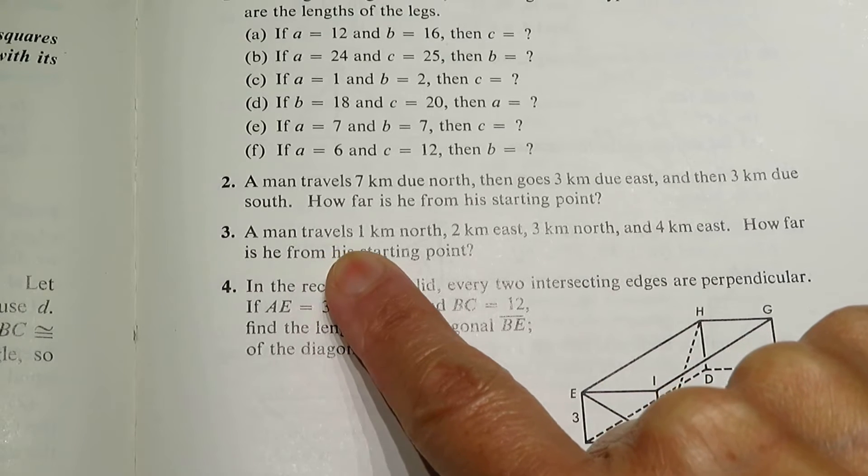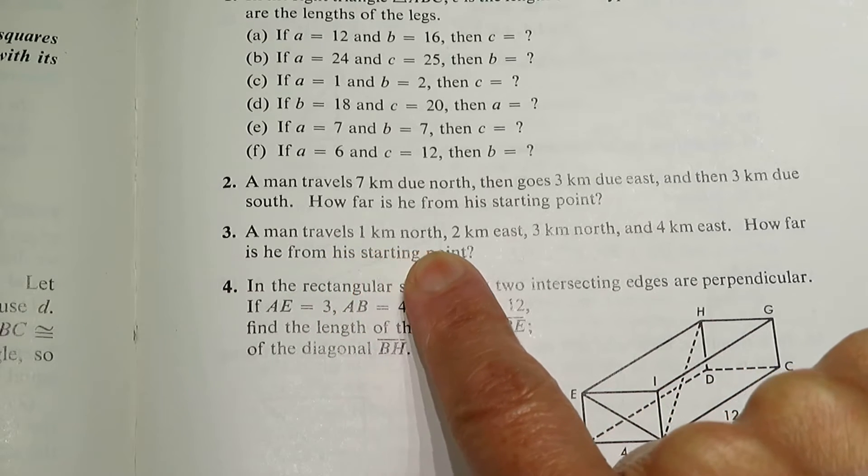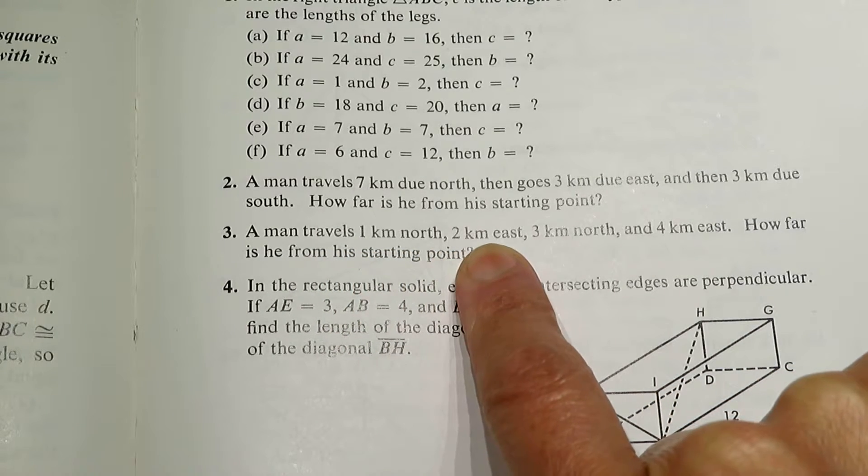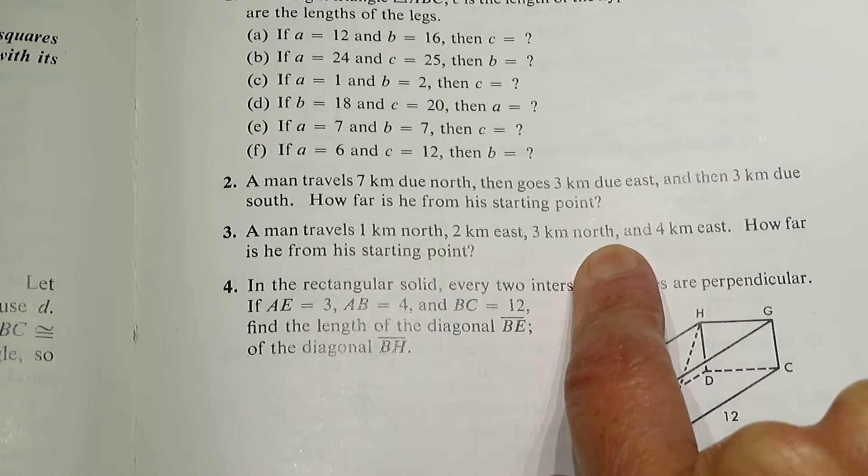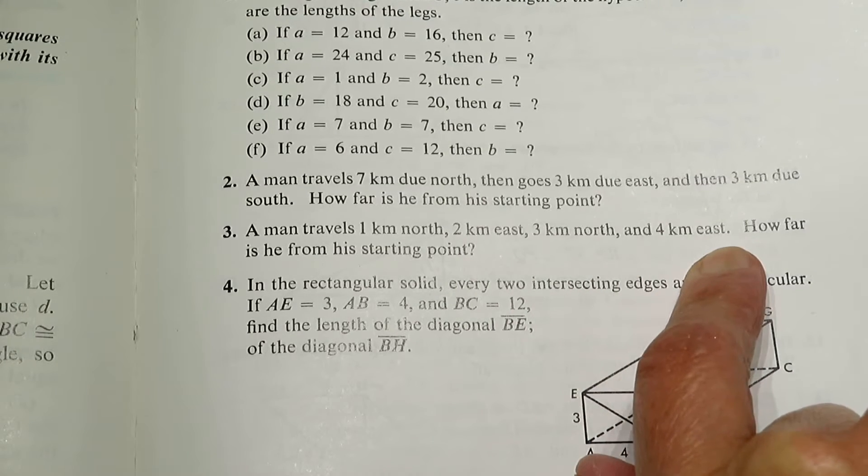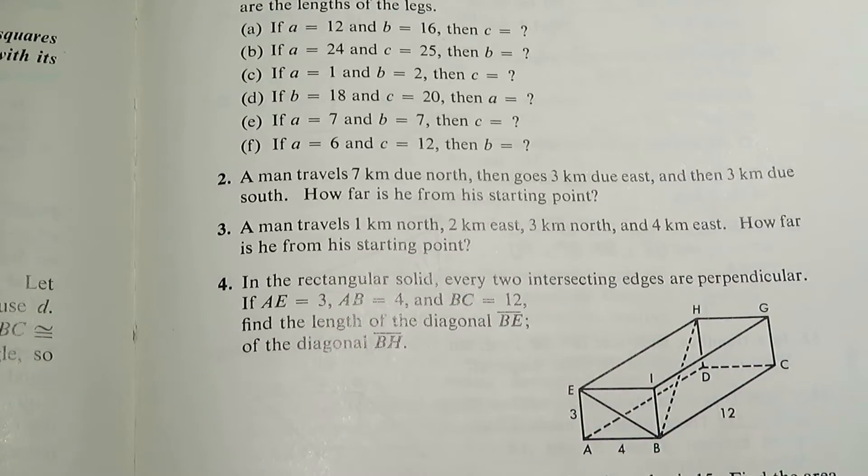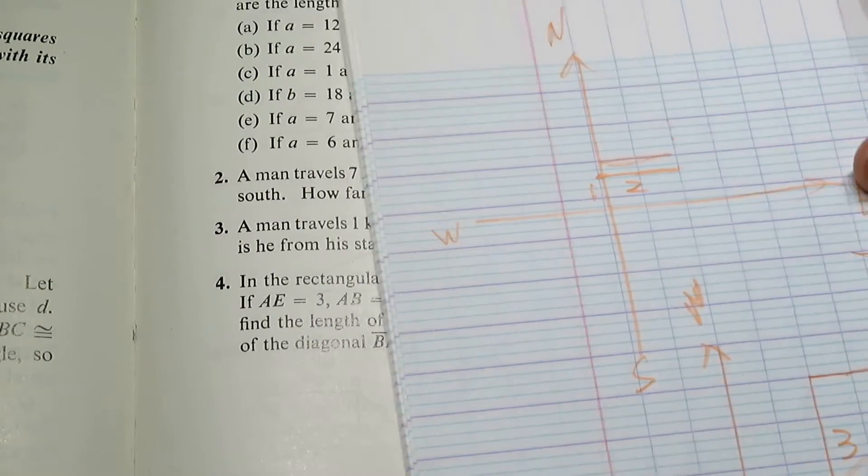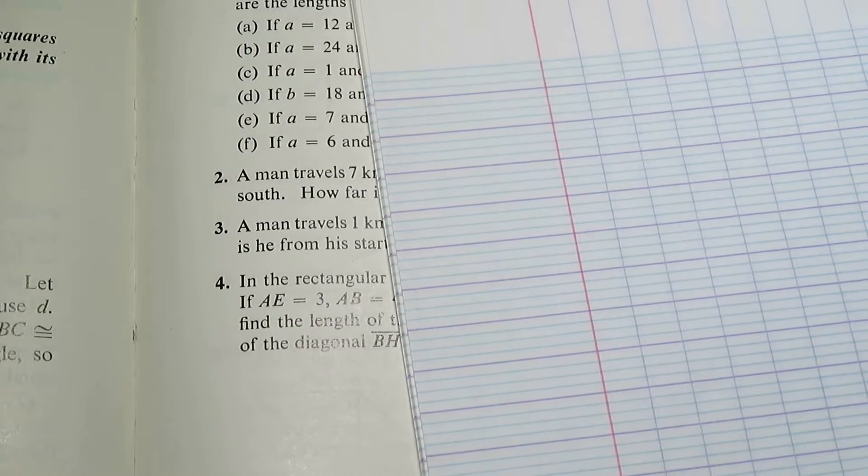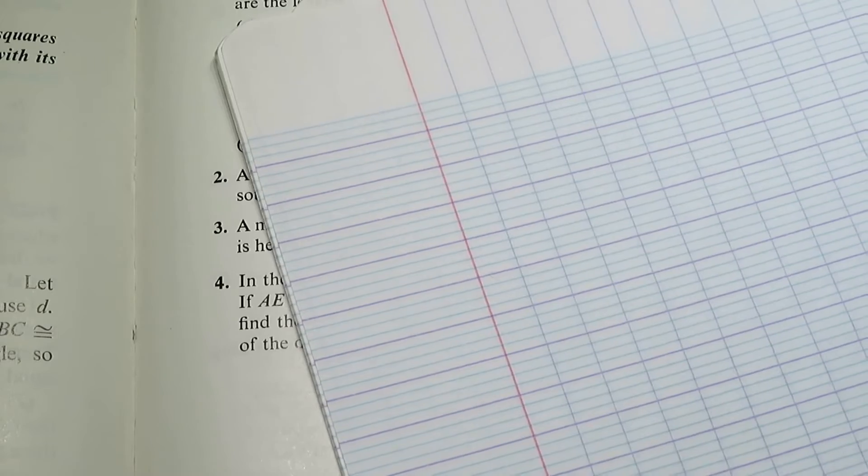Number three: A man travels three kilometers north, two kilometers east, three kilometers north, and four kilometers east. How far is he from the starting point? So when we see this kind of problem, the first thing is to draw a diagram.